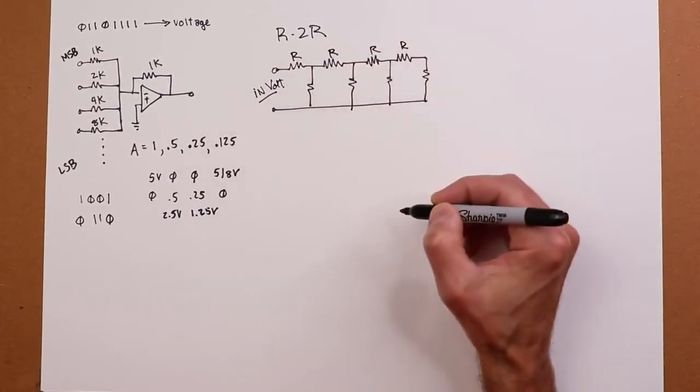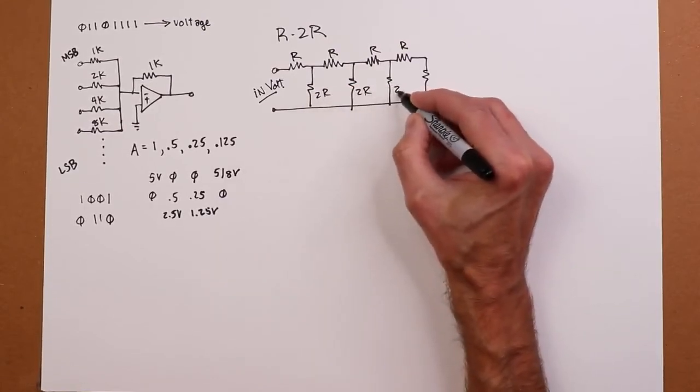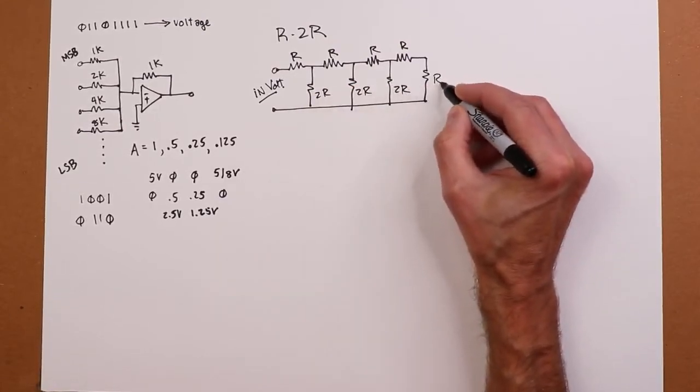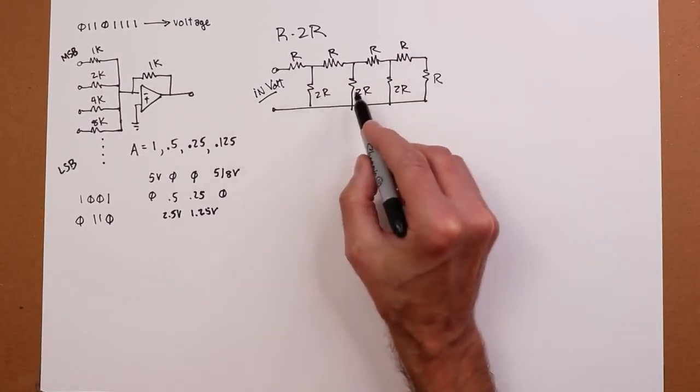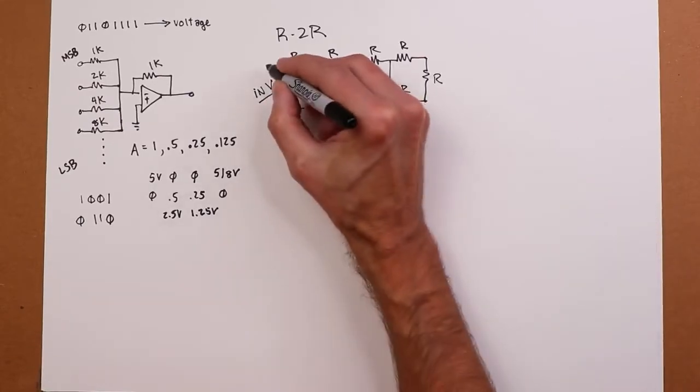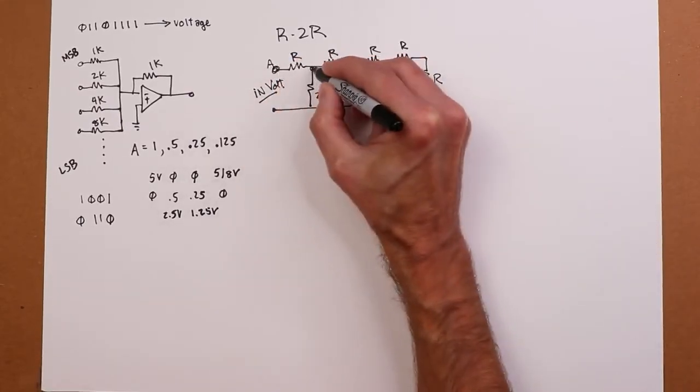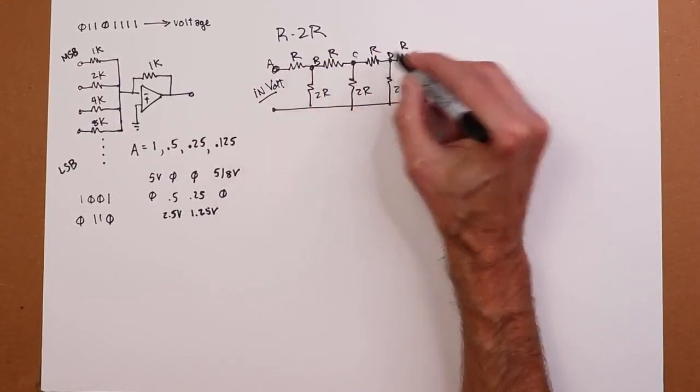These vertical values are all two times that, with the exception of the last one. The last one is just R. So this could be 10K, 10K, 10K, 10K, 10K, 20K, 20K, 20K. It doesn't really matter what the R value is. Let's call this point A, point B, point C, point D, point E.